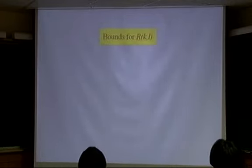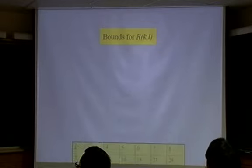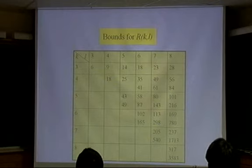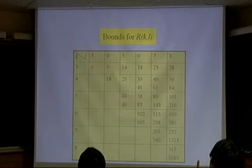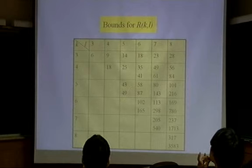The classical Ramsey number r(k,l) has been studied very extensively, but we do not know that much about these numbers. Here is a table of small Ramsey numbers. For example, on the diagonal, we know r(3,3)=6, as I just mentioned, and we know r(4,4)=18, but we do not know r(5,5) — there's only an upper bound and a lower bound, and the gap keeps getting bigger.